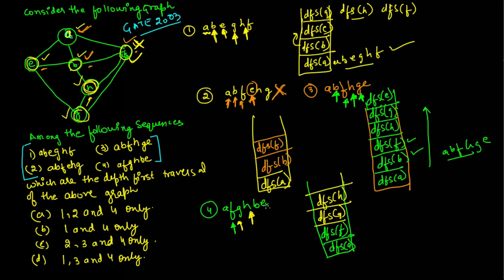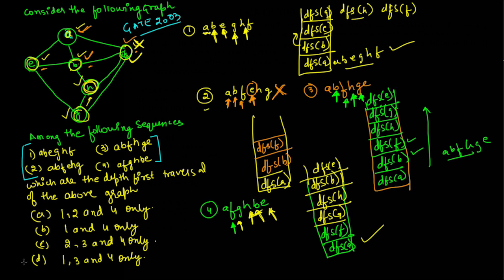When we call DFS on H, the adjacent vertices are B, F, and G; F and G are already visited, so we must visit B. We call DFS on B. The adjacent vertices of B are A, F, E, and H; A, F, and H are already visited, leaving only E. So we call DFS on E. The complete sequence A, F, G, H, B, E is valid. Therefore, sequences one, three, and four are valid — option D is correct.